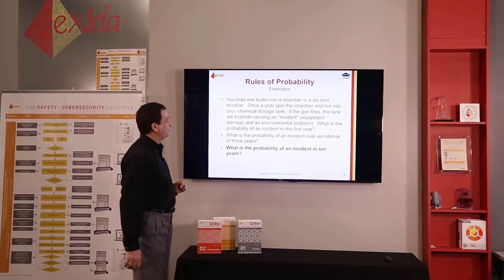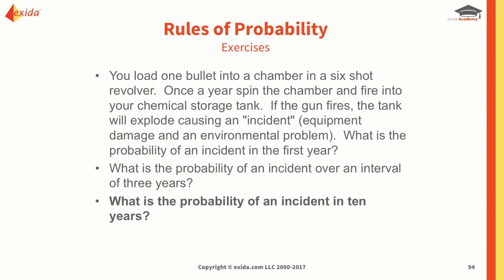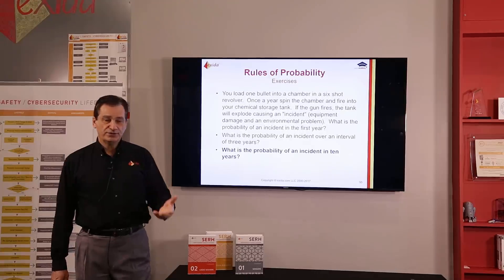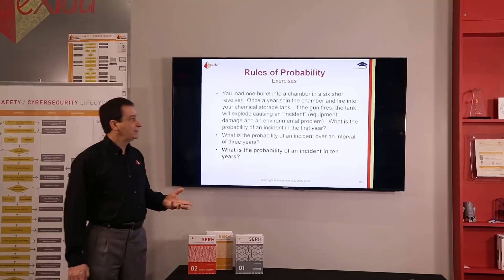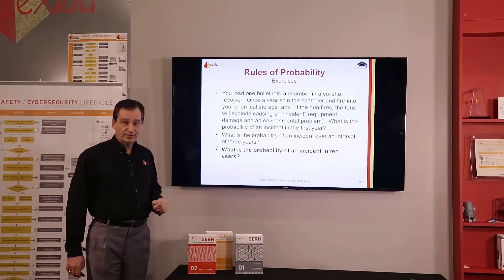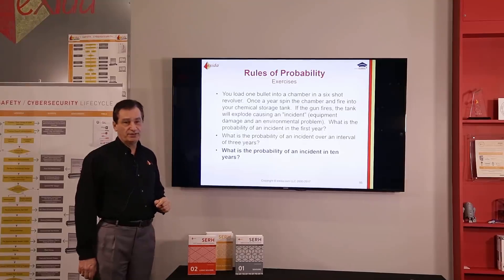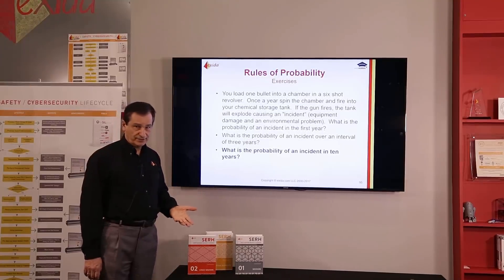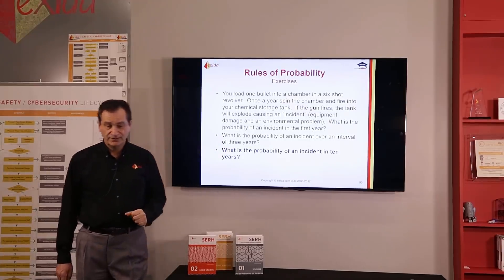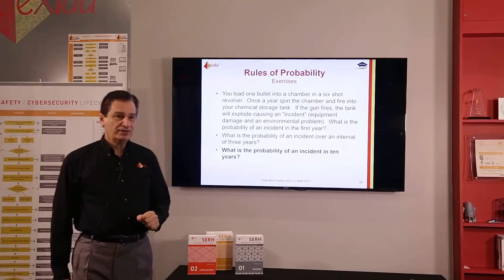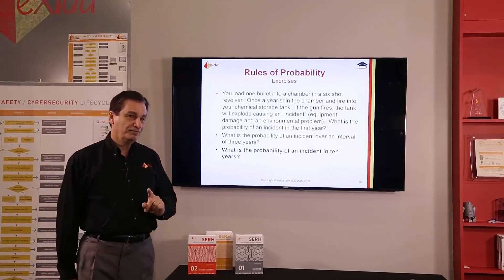Let's revisit this question — this is of course a variation on Russian roulette. If we have six possibilities and one bullet, the probability of an incident in the first year is one in six. But what's the probability over three years? Some people say it's 1/6 times 1/6 times 1/6 — but no, that's not the correct way to look at this.